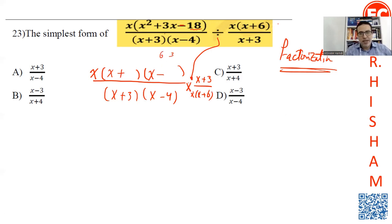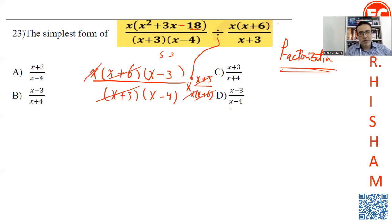The greatest takes the sign of the middle. Then cancel anything in the numerator with anything in the denominator. The answer will be x minus 3 over x minus 4.